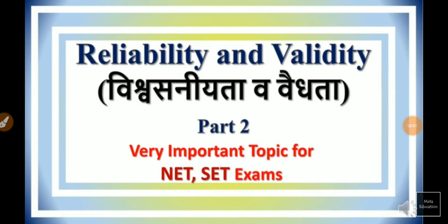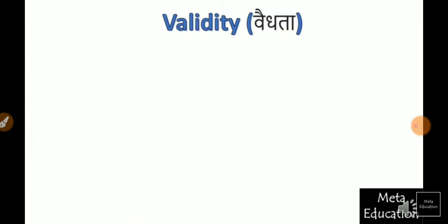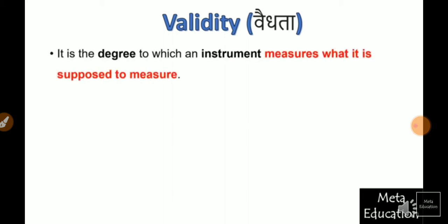In this video, we have discussed about validity and reliability. Reliability and validity are both concepts that we use when we do research or construct a tool. We have seen reliability and now we will understand validity. It is the degree to which an instrument measures what it is supposed to measure.